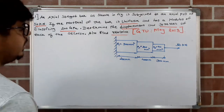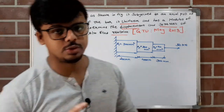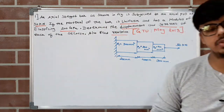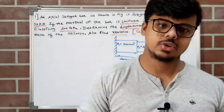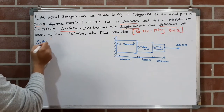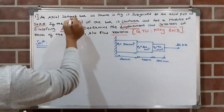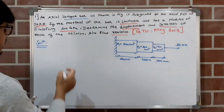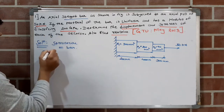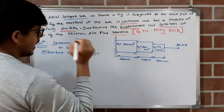I hope you know the concepts of nodes, elements, and how to place them, and the element connectivity table. If not, please go watch the previous videos in the playlist — I will also provide the link in the description. First, decide which type of structure it is. Here it is a step bar, so we will consider a bar element.